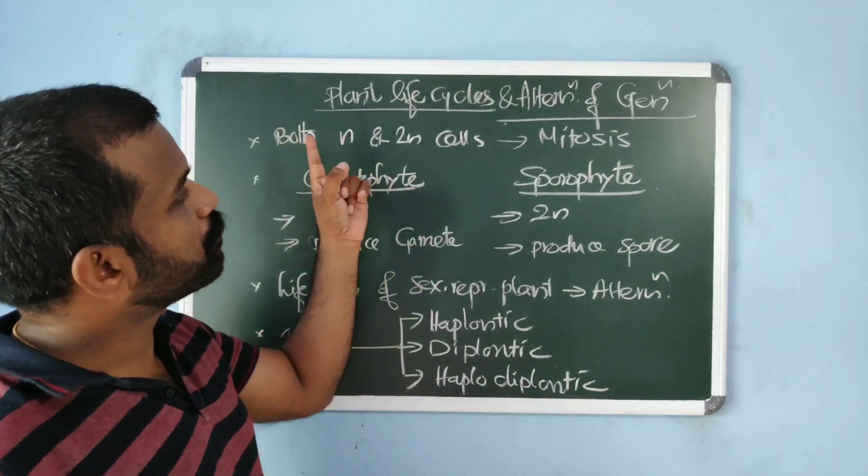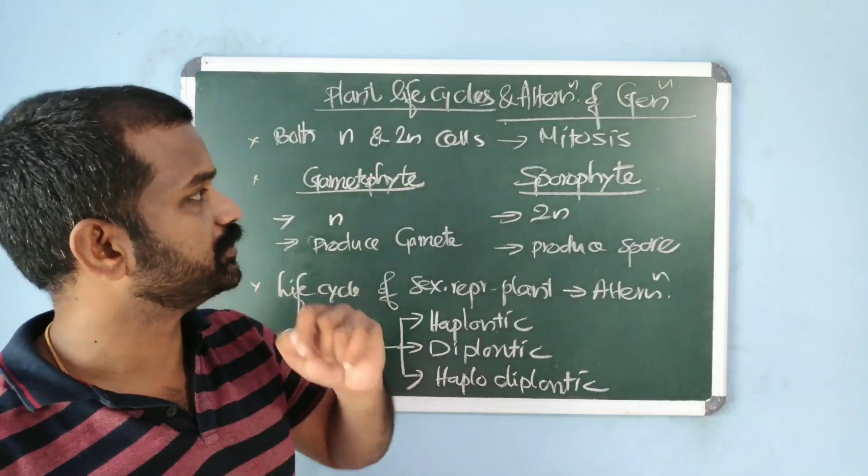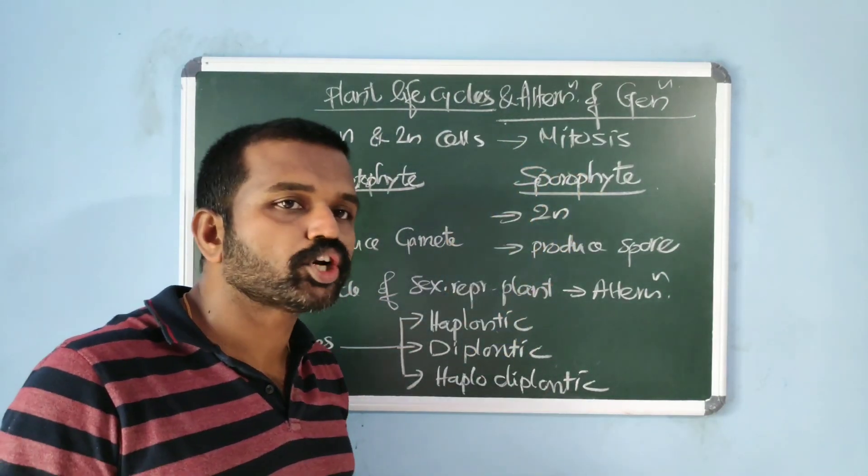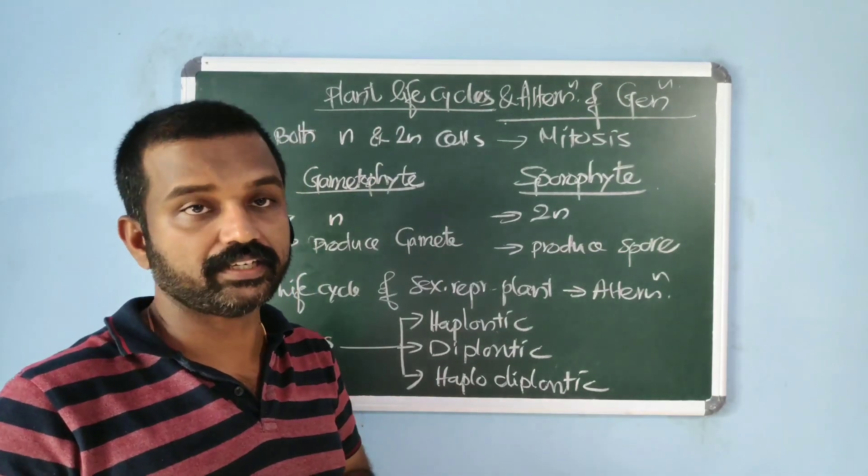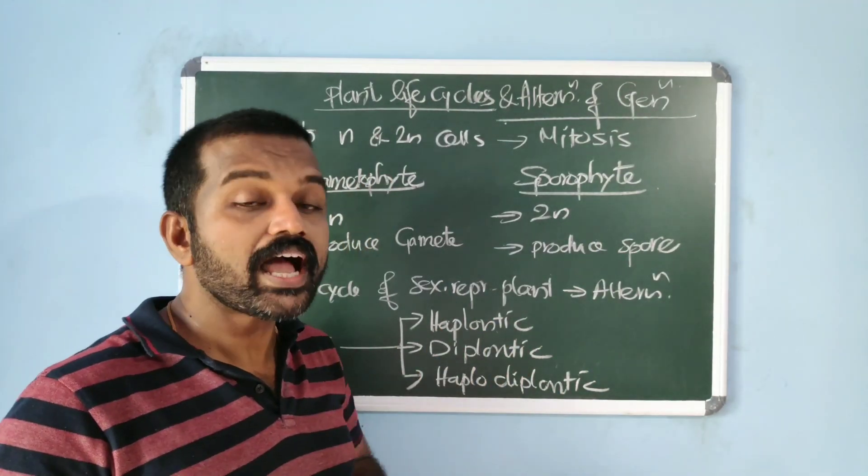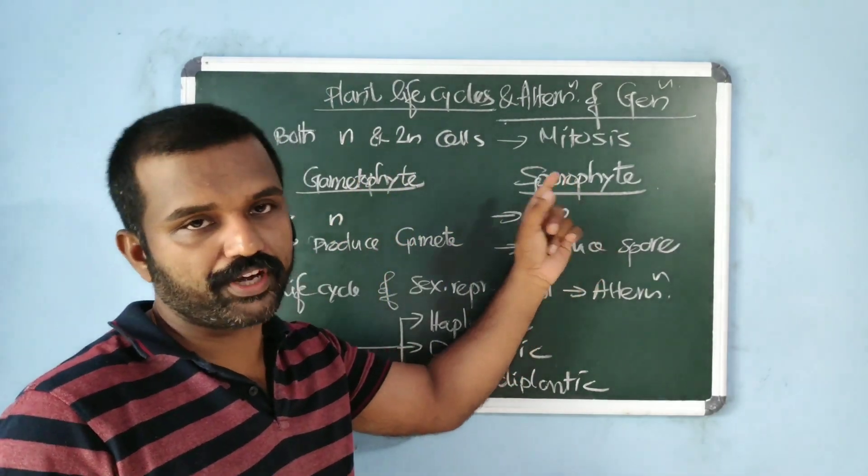In plants, both haploid and diploid cells undergo mitosis, that is the equational division. This ability leads to the formation of two types of plant bodies: a haploid gametophytic plant body and a diploid sporophytic plant body.